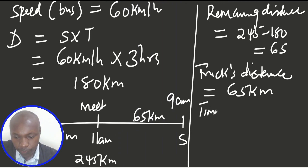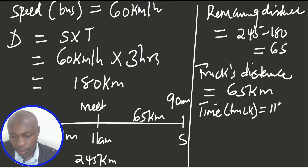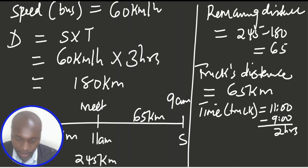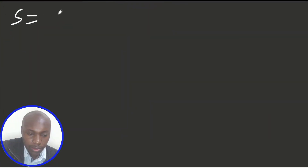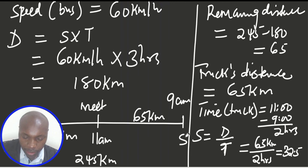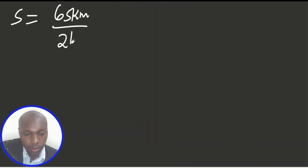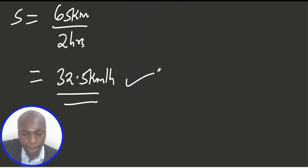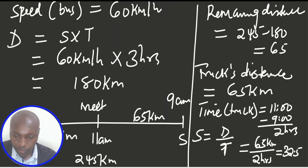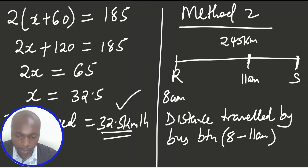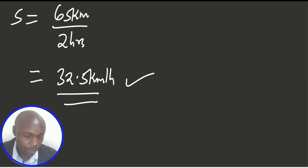The time taken by the truck is 11 minus 9, which is 2 hours. Speed equals distance divided by time: 65 kilometers divided by 2 hours gives 32.5 kilometers per hour. Using both methods, we get the same answer — method 1 gives 32.5 and method 2 also gives 32.5 kilometers per hour. That is how you solve that question.